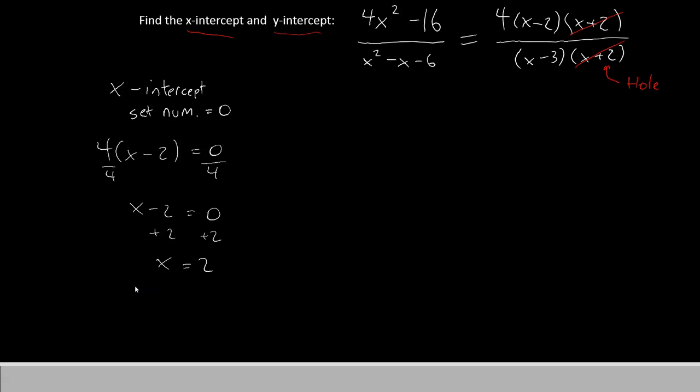Of course, it's not enough just to get the x value. You need to write it as an ordered pair, which is 2 comma 0. We'll use this in our next episode when we graph the function.